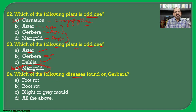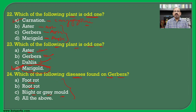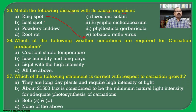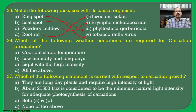Which of the following diseases are found on gerbera? Foot rot, root rot, blight or grey mold — all three are found on gerbera, so D is the correct answer. Match the diseases with causal organisms in gerbera: ring spot is caused by tobacco rattle virus, leaf spot by Phyllosticta gerberae, powdery mildew by Erysiphe cichoracearum, and root rot by Rhizoctonia solani.